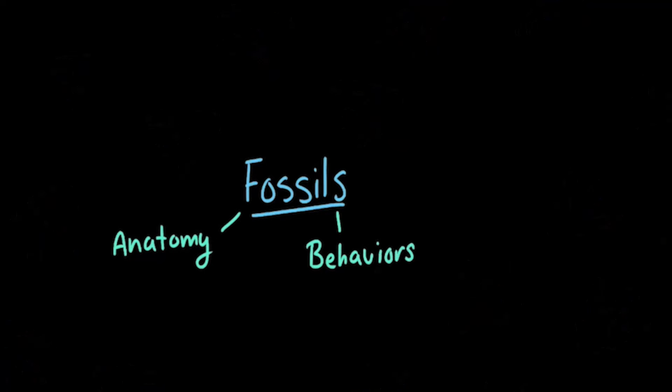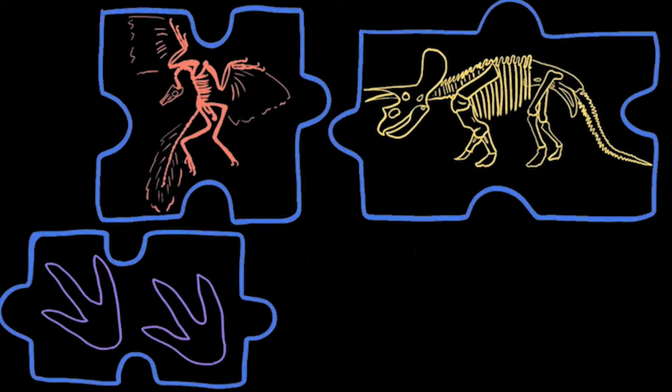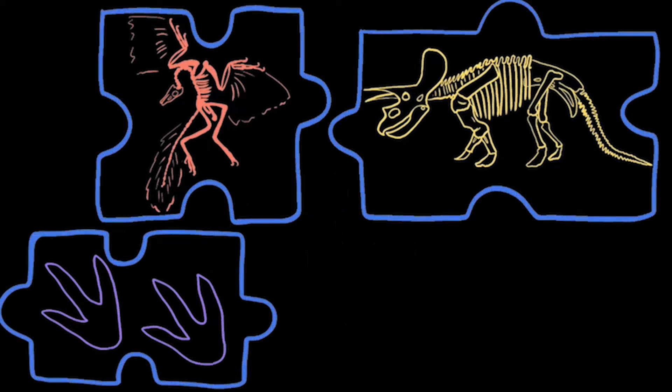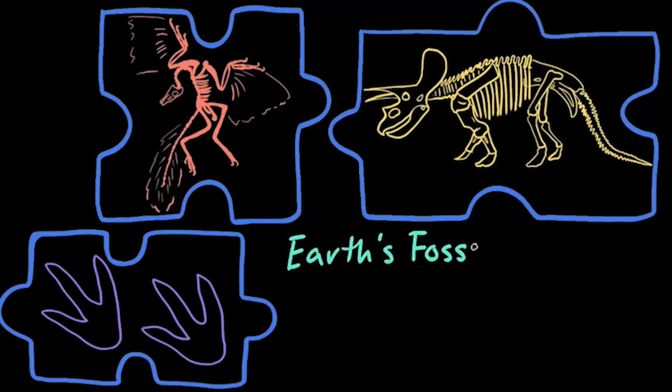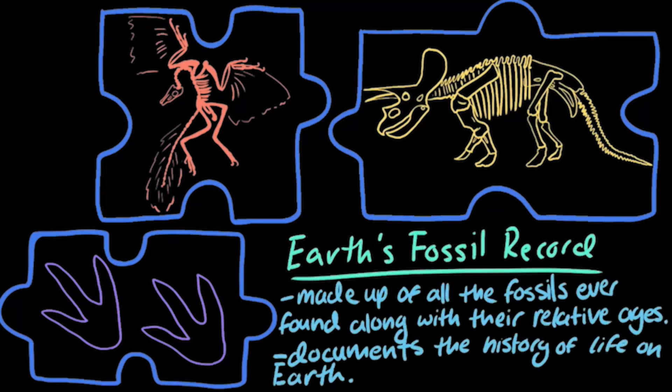Each fossil that has been found is like a piece of a giant puzzle. To see the bigger picture of the history of life on Earth, scientists have to study the many fossils and see how they all fit together. All the fossil puzzle pieces that have been discovered, along with their relative ages, make up Earth's fossil record. The fossil record is basically a history of life on Earth as documented through fossils.